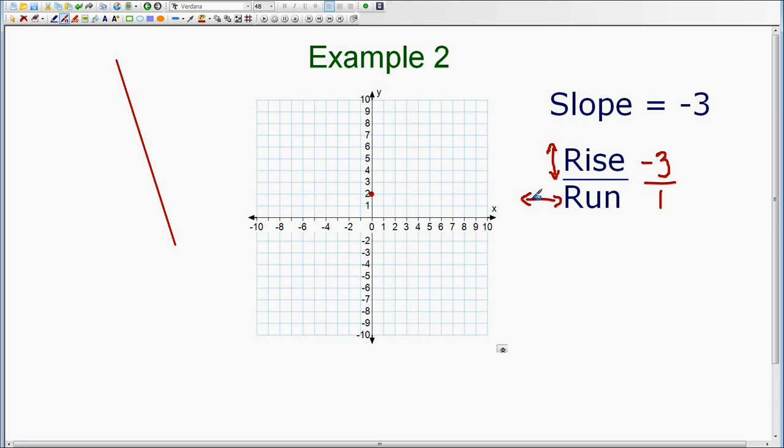A slope of negative 3 means that we need to rise negative 3 and run 1.